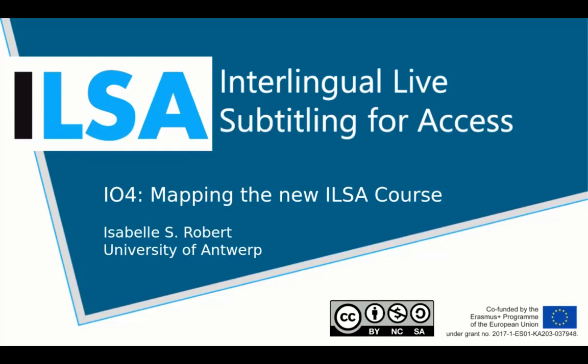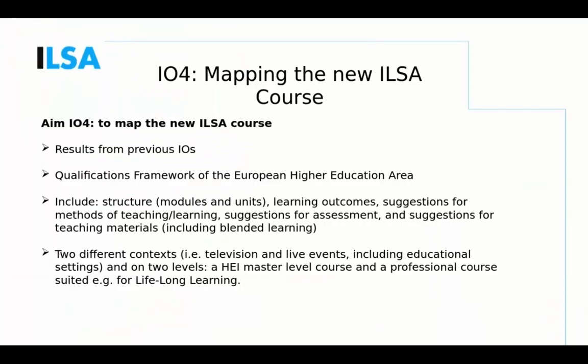IO4 is the fourth intellectual output and the title and aim of IO4 was mapping the new ELSE course. The aim of this intellectual output was to map the course, and we based our work on the results delivered by the previous IOs, taking the qualifications framework of the European Higher Education Area into account.